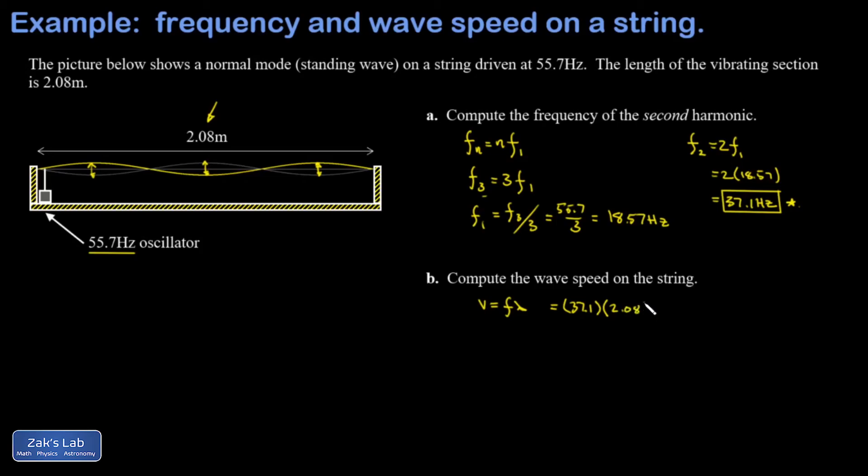So the frequency of that second harmonic, again, 37.1 hertz, the wavelength 2.08 meters, and I arrive at a wave speed of 77.2 meters per second.